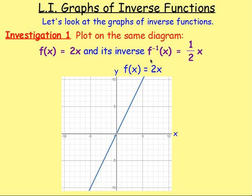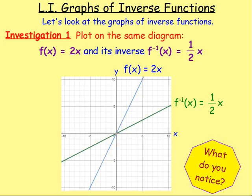Do the same thing with f to the negative one of x. If you graph that, put it on the same diagram, go and do your table of values, you should end up with something that looks like this. So f to the negative one of x is a half x, and that's them on the same diagram. So what do you notice? What do you see?